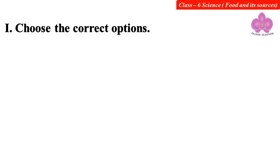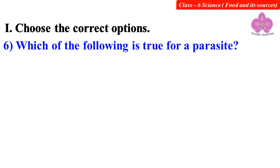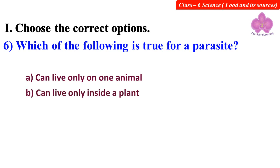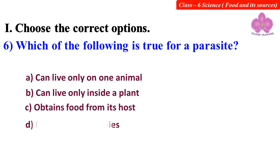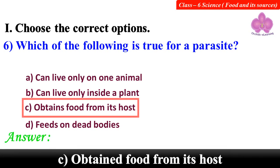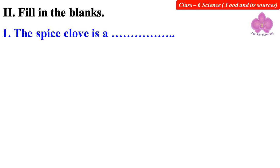Which of the following is true for a parasite? Option A: Can live only on one animal. Option B: Can live only inside a plant. Option C: Obtains food from its host. Option D: Feeds on dead bodies. Answer: C. Obtains food from its host.